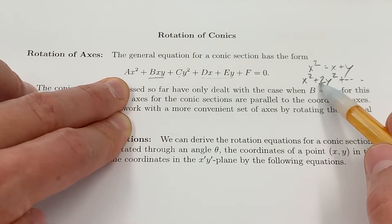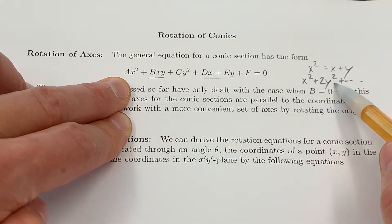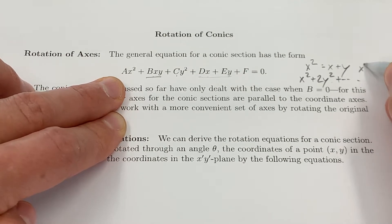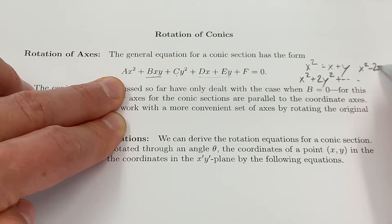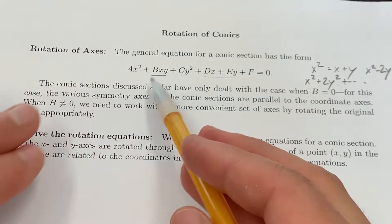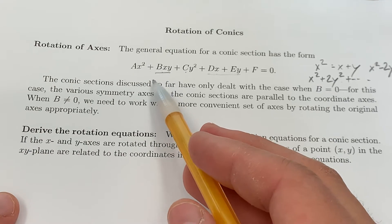And the last category we had is what if it's like x² - 2y²? Well that's pretty clearly a hyperbola. But what happens if this term is non-zero?